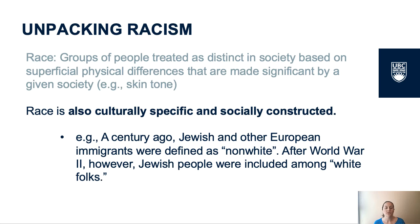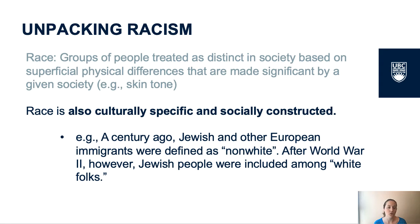Race is also culturally specific and can change in different contexts. One way to see how societies construct race is to look at the historical experiences of particular categories of people in the United States. A century ago, Jewish immigrants and some other European immigrants were defined as non-white. After World War II, however, Jewish people were redefined as white folks.